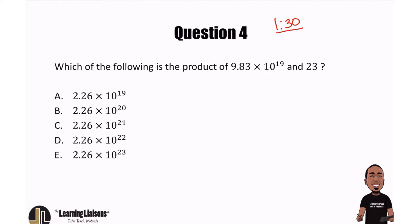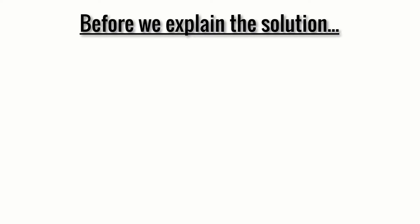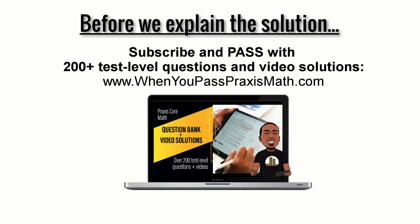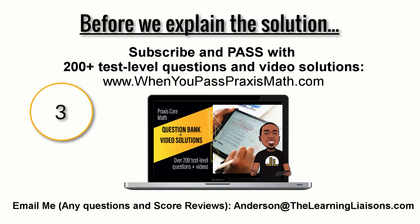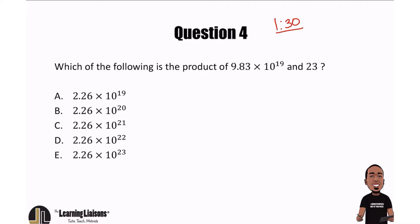The key word here is 'product,' so we're going to go ahead and multiply. We're going to multiply 9.83 times 10 to the 19th and 23. Similar to problem number three, what we're going to do is multiply the 23 and 9.83 first, and then we're going to manipulate the decimals if we need to.